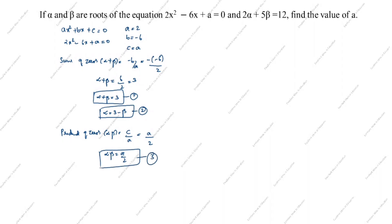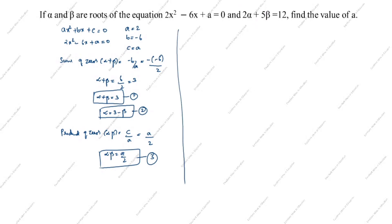You see here what we need to find — the value of a. We have 2 alpha plus 5 beta equals 12 given. So we will use this to solve. In the next step, 2 alpha plus 5 beta equals 12. We substitute alpha equals 3 minus beta into this equation.